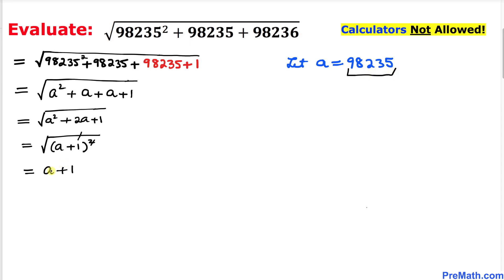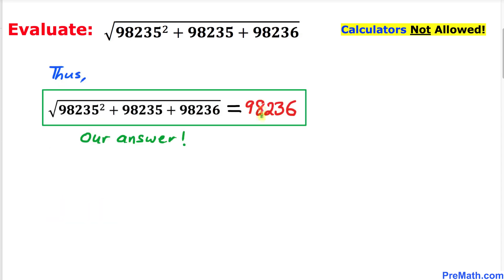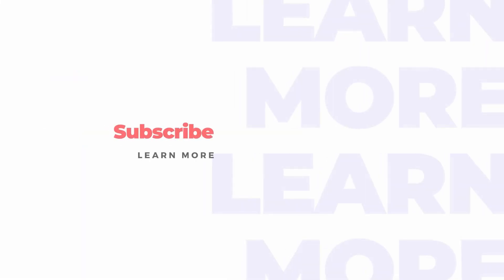But we know our original value of a is 98^35, so let's substitute that in — replacing a with 98^35 and then plus 1. Our simplified answer turns out to be 98^36. Thanks for watching, and please don't forget to subscribe to my channel for more exciting videos. Bye!